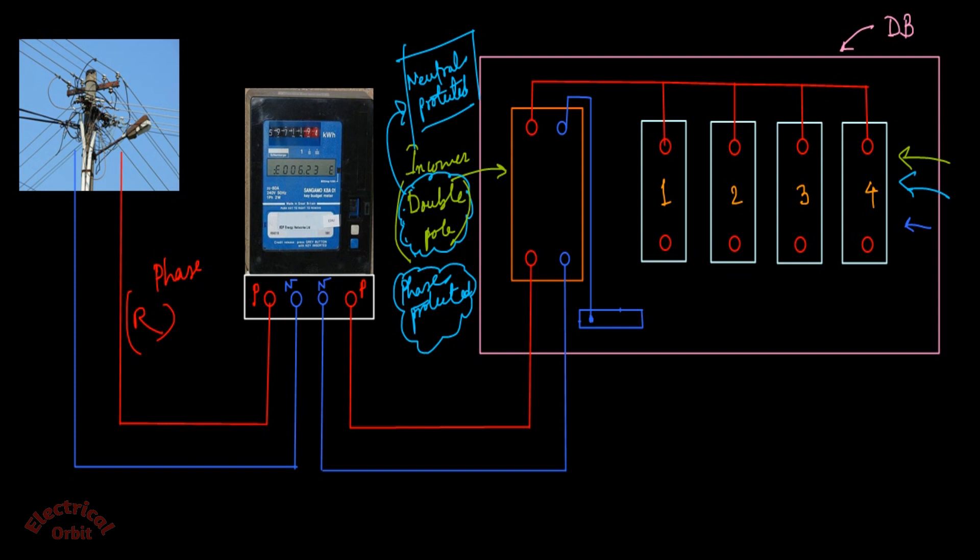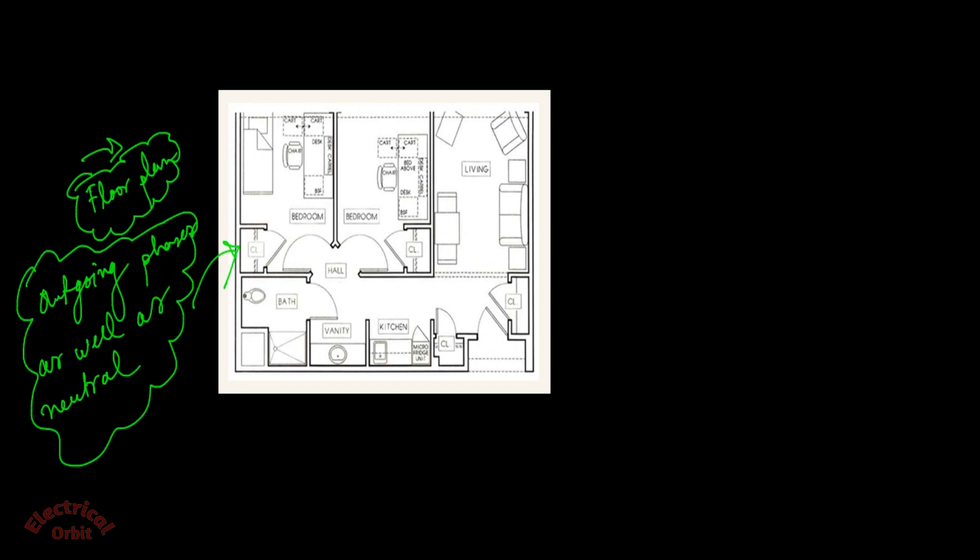The outgoing of individual MCBs will go out like this - these are the phases. Now this is a floor plan of any house. In this floor there are various electrical equipments or loads. Our objective is to bring the outgoing phases as well as neutrals to the points of this floor. Before doing that, we have to make a proper plan.